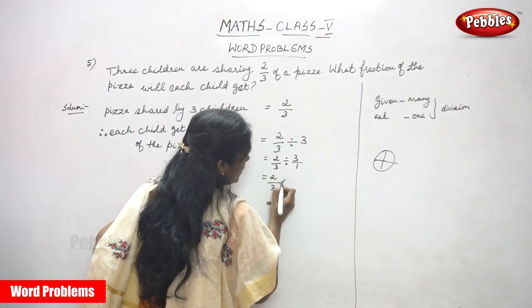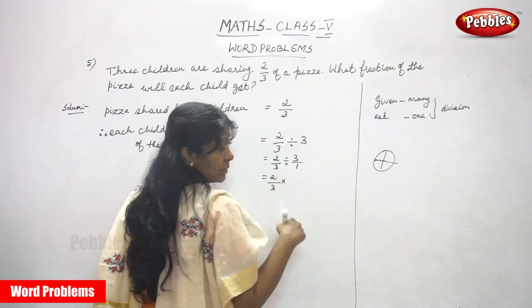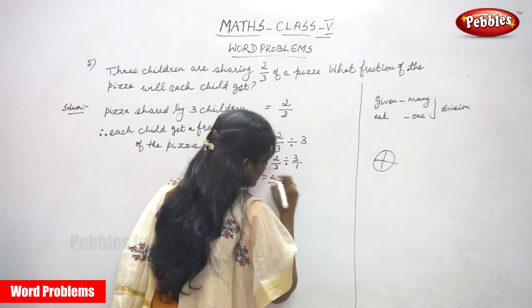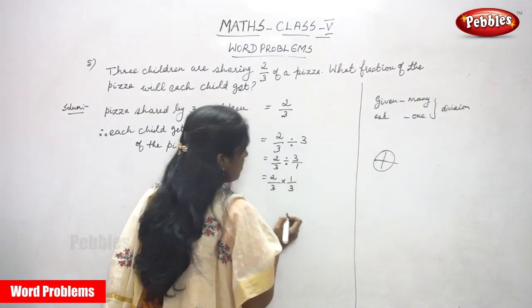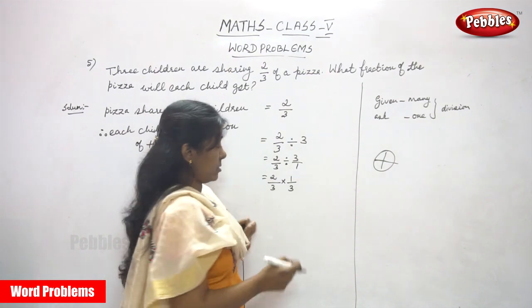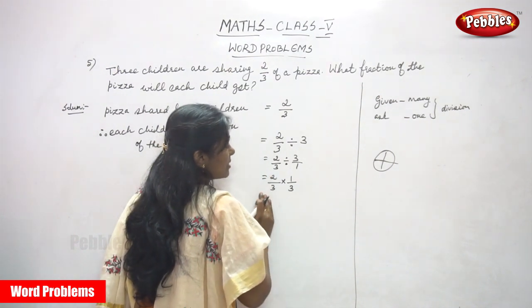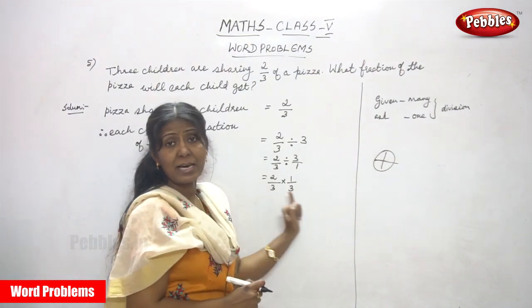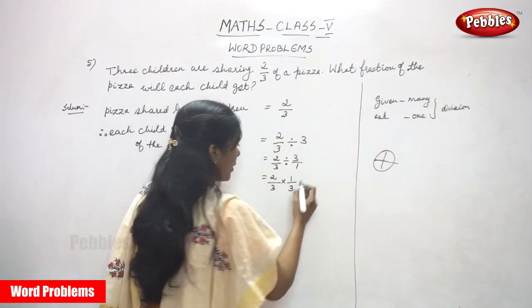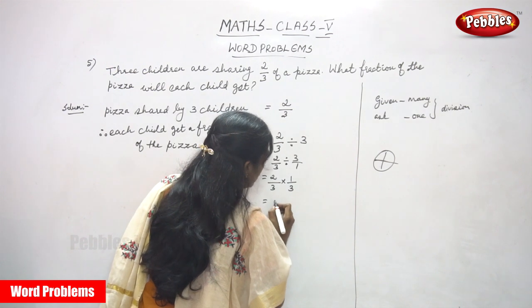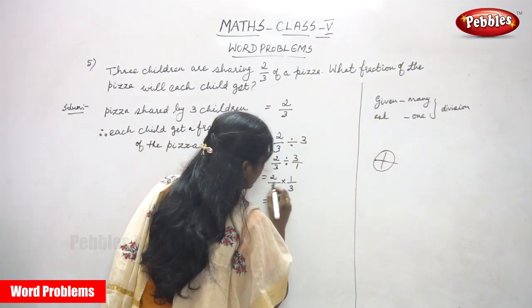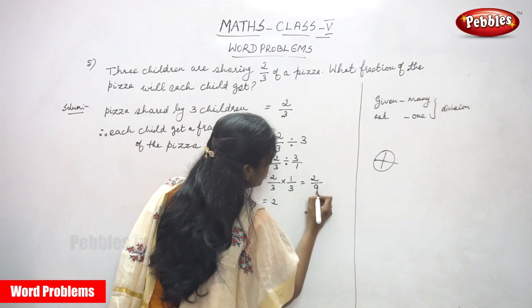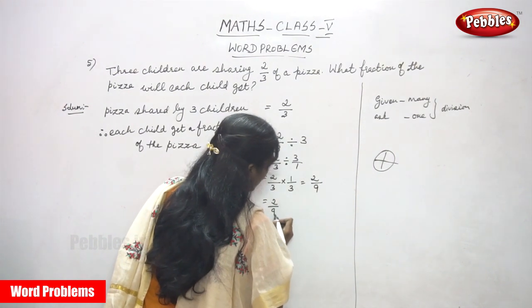So you have to make it as 2/3 divided by 3/1. After that you have to convert it into the reciprocal. So the reciprocal of the divisor 3/1 becomes 1/3. So 2/3 is the dividend and 1/3 is the divisor. So the answer: two into one is two, three into three is nine. So the answer is 2/9 fraction.